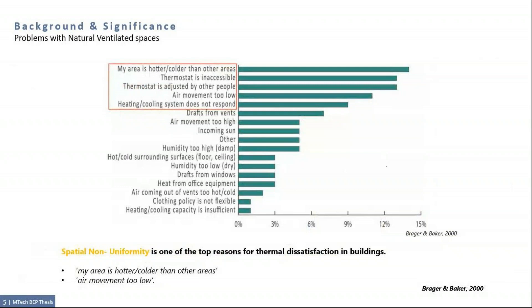This study focuses on seven areas of indoor environment performance, thermal comfort being one of them. As per the results, 41% dissatisfied people. The prime reason of dissatisfaction was that the area is hotter or colder than other area or lack of air movement. Thus, spatial non-uniformity is one of the top reasons for thermal dissatisfaction in buildings.